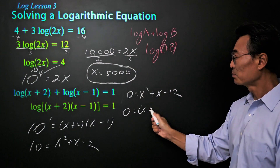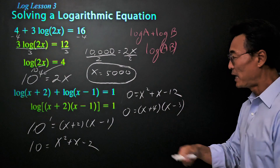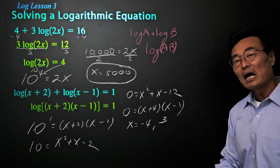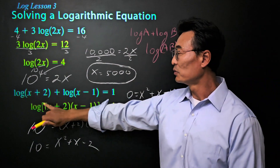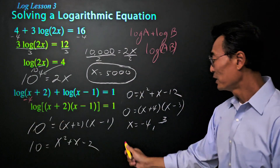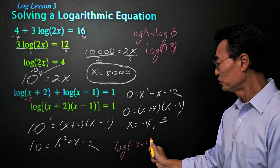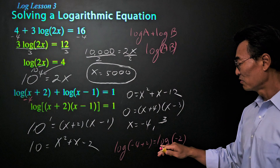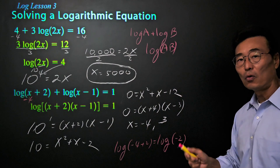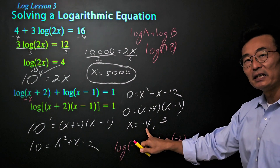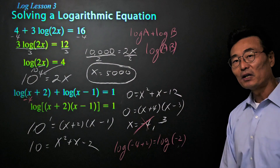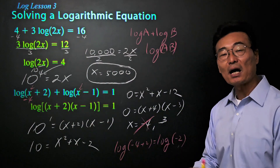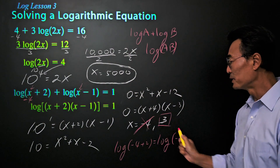Factoring that, we get x plus four times x minus three, where we get x equals negative four or positive three. However, notice that if we take that negative four and plug it into the original equation, we end up getting log of negative four plus two, or log of negative two. Remember, when you do logs, you cannot take the log of a negative number or a zero. So we need to eliminate negative four as part of our solution. If you take three and plug it into x, it gives a positive value, so three is going to be our only solution.